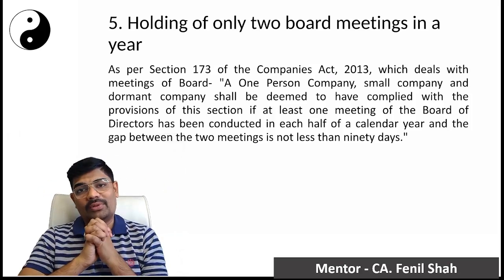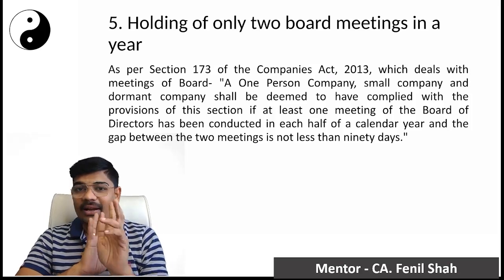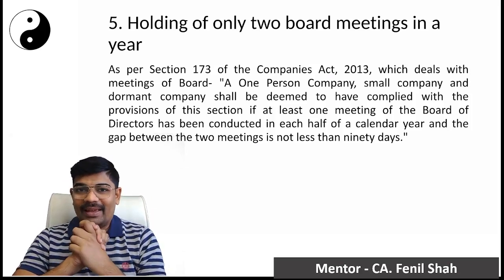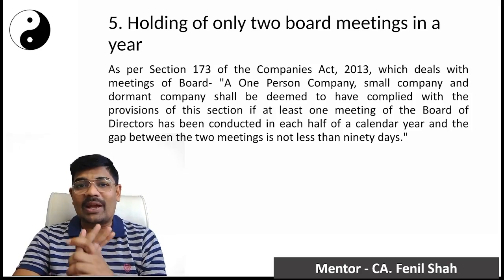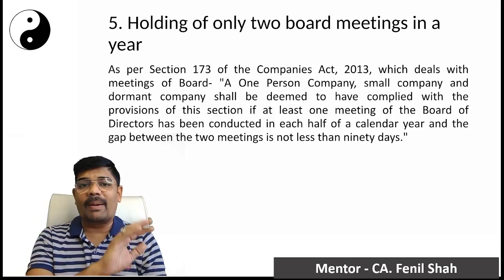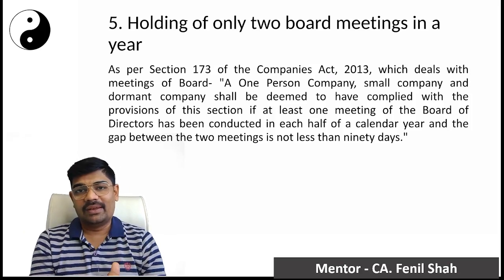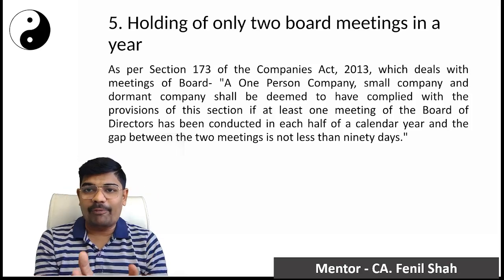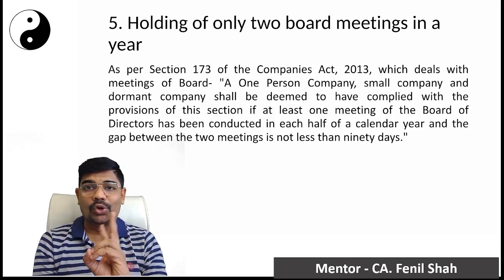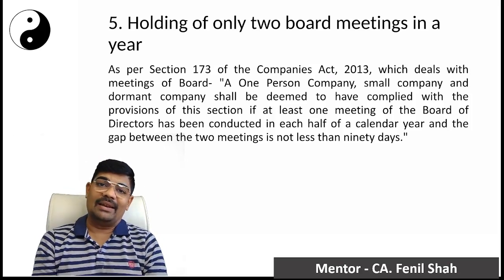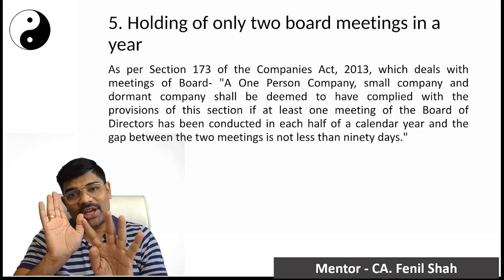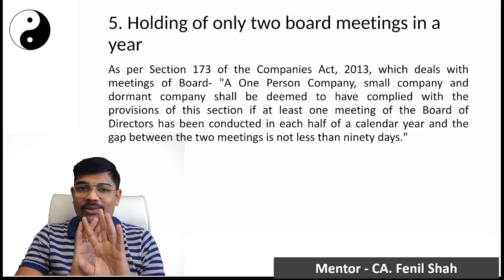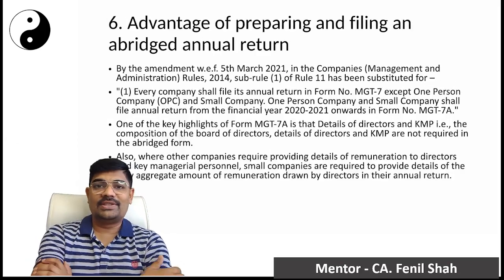The fifth benefit: board meetings. Normal companies must hold four board meetings per year. But small companies, OPC, and dormant companies shall be deemed compliant with Section 173 if at least one board meeting is held in each half of the calendar year, with a minimum gap of 90 days between two board meetings. So if a small company holds two board meetings with a gap of 90 days, it is sufficient.